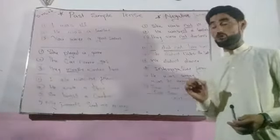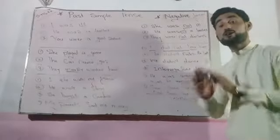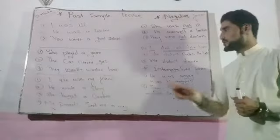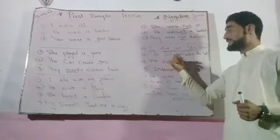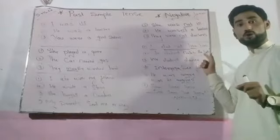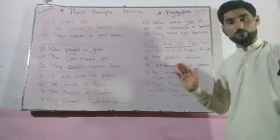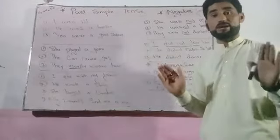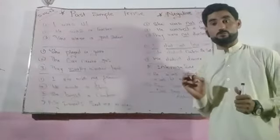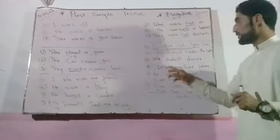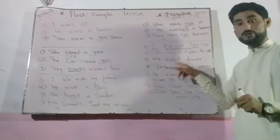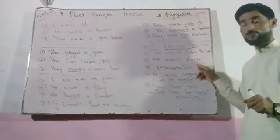Next: 'She didn't catch the ball.' I started with 'she', then 'did not' — the contraction is 'didn't'. Then the base form 'catch'. In negative, interrogative, and WH-question structures, we use the first/base form of the verb. Finally: 'We didn't dance.' Subject 'we', contraction 'didn't', base form 'dance'.